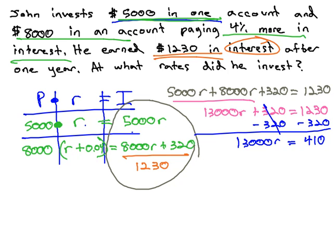Oops, it doesn't equal 410, it equals 910. Now when we divide by 13,000 to get R alone, we get R, or our interest rate, is 910 divided by 13,000, or 0.07.